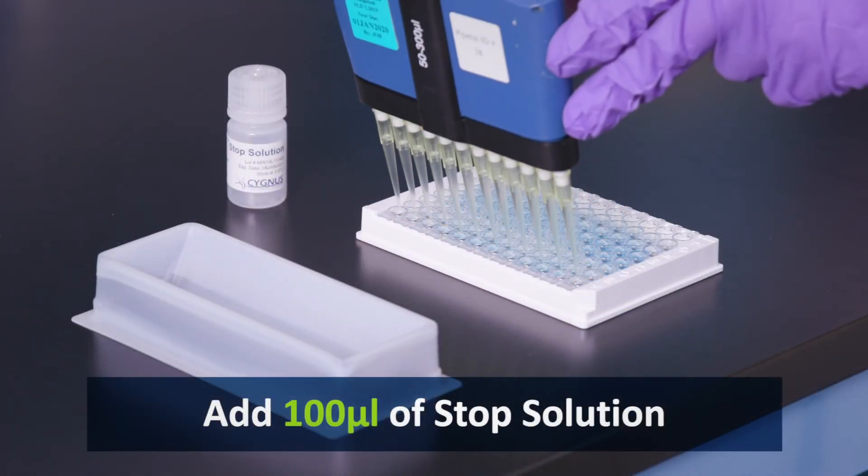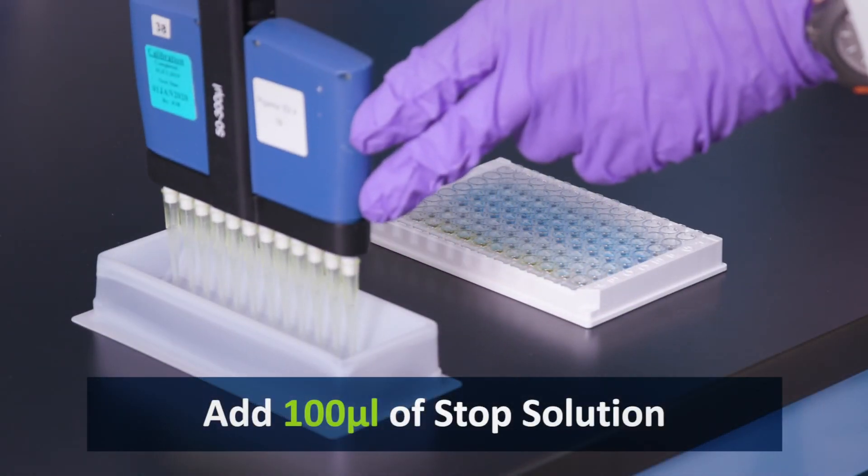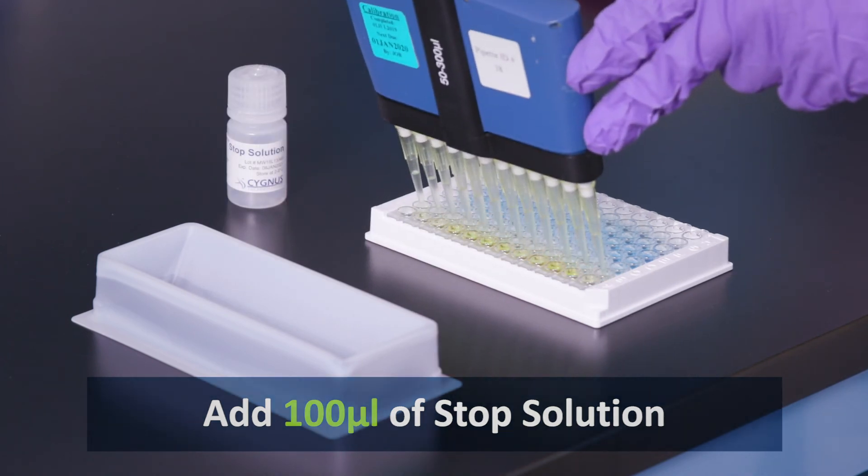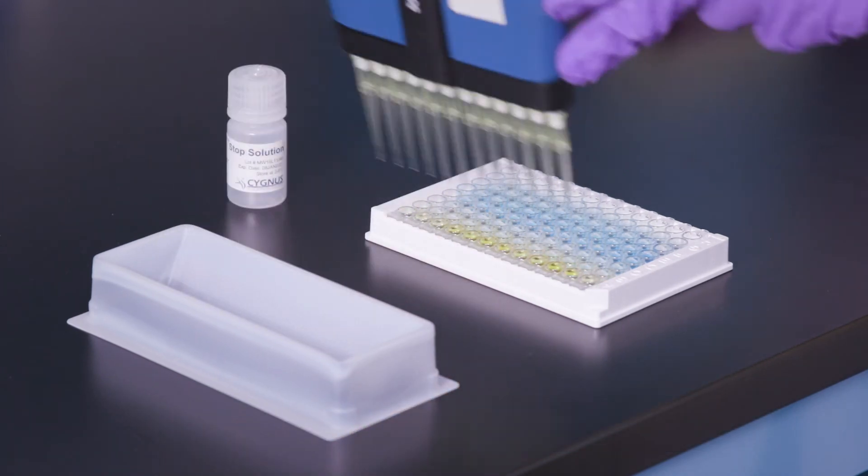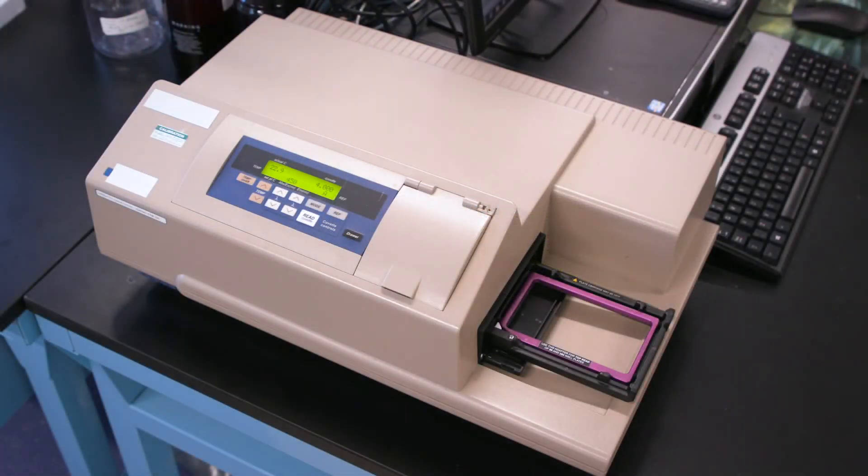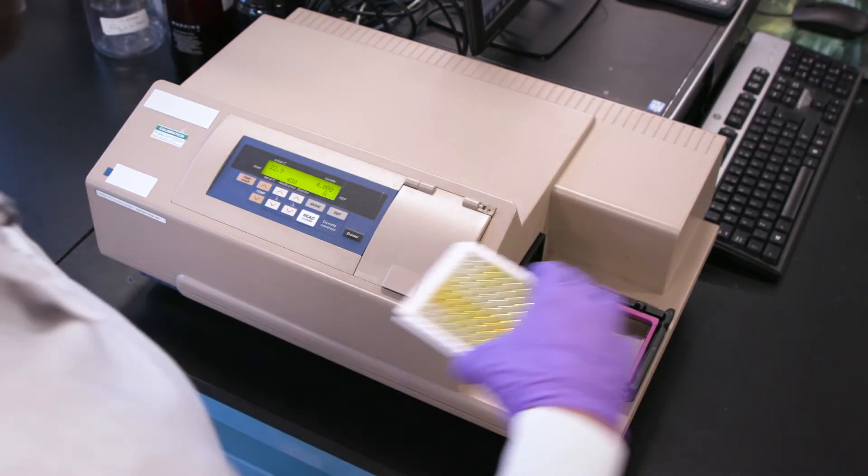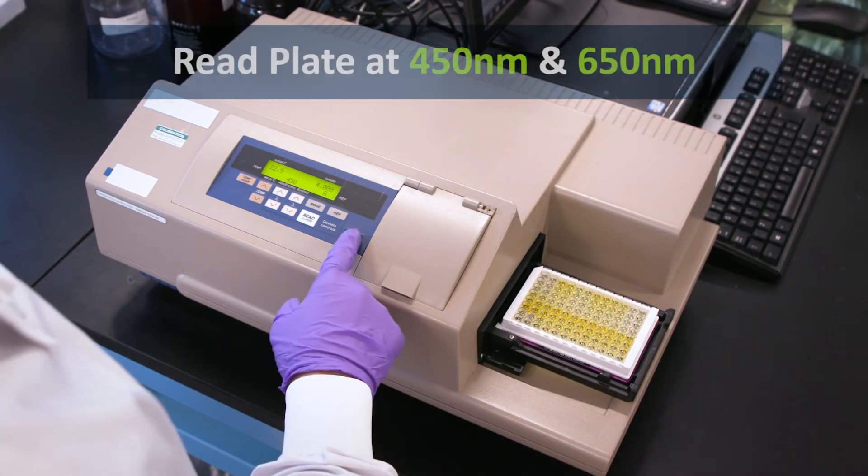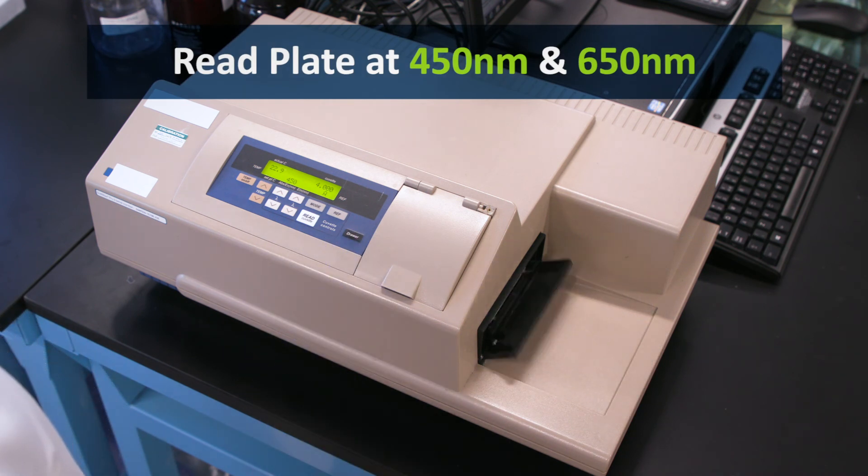Finally, pipette 100 microliters of stop solution into the wells. With this, the microtiter plate is ready for the spectrophotometer. The plate should be read at 450 and 650 nanometers.